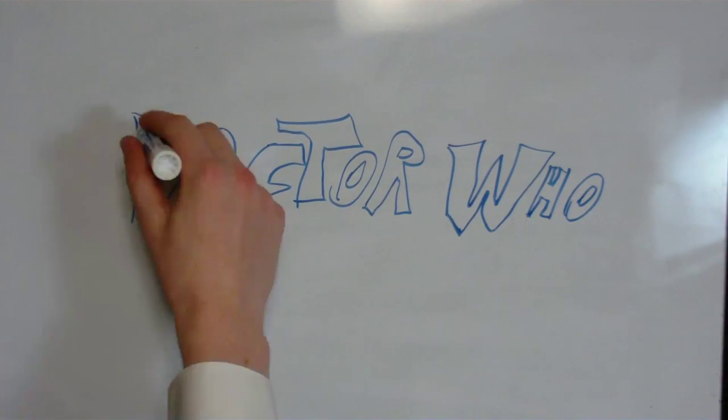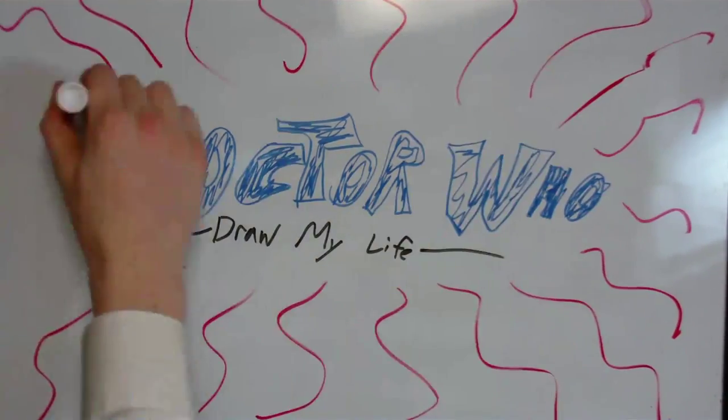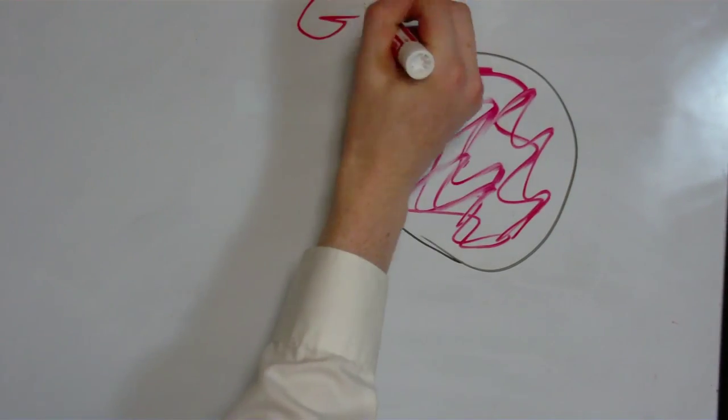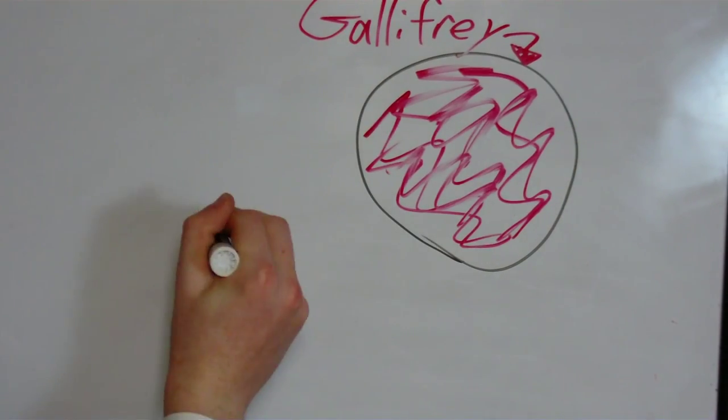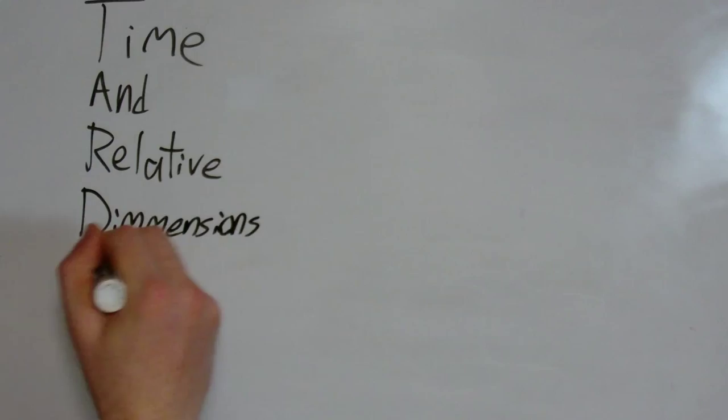Hello, I'm the Doctor, and this is my Draw My Life video. I'm a Time Lord. I was born and grew up on the planet Gallifrey. That part of my life was really quite boring, and you don't want to hear about that. I stole a time machine called a TARDIS, and I ran away.